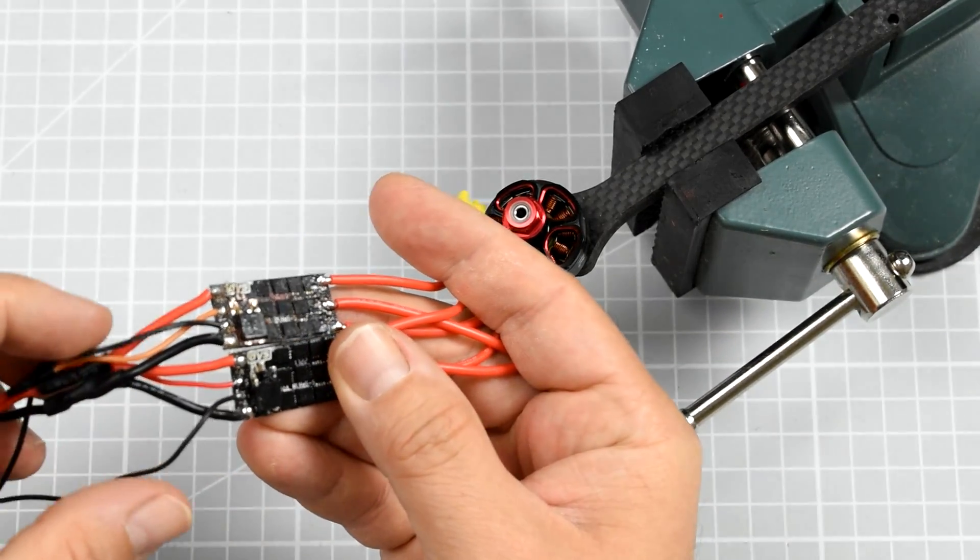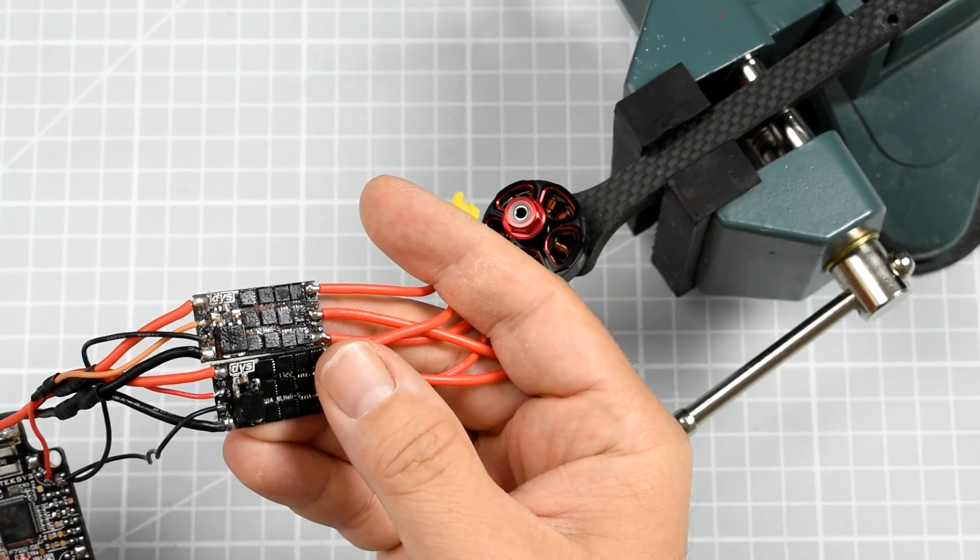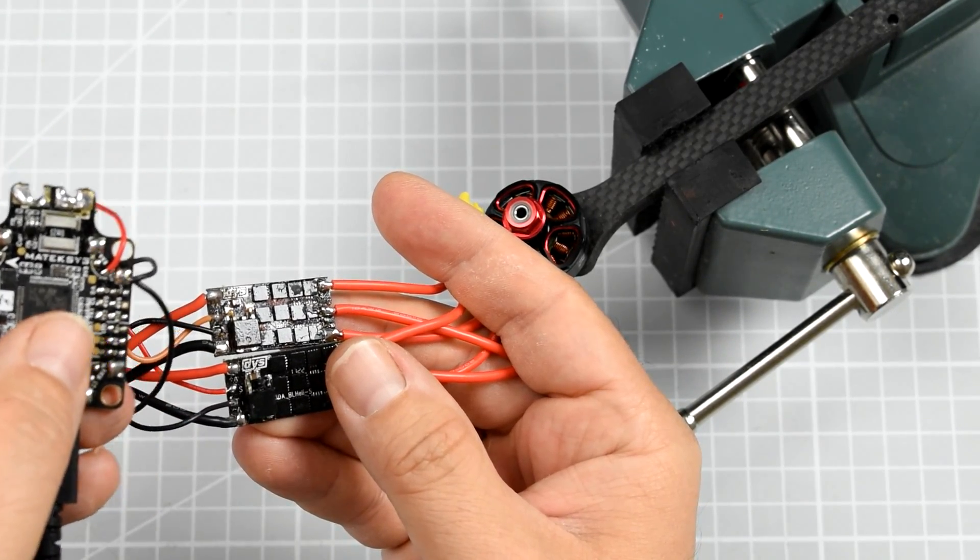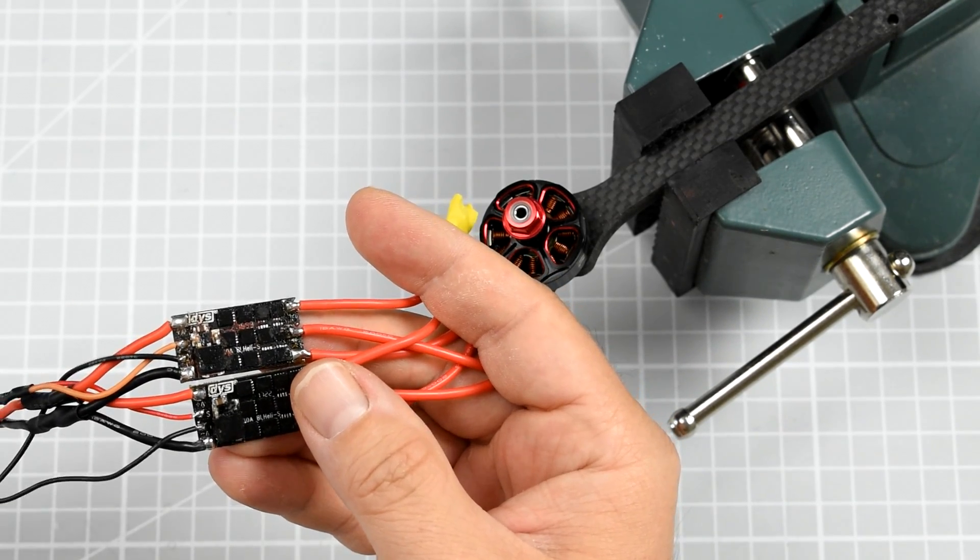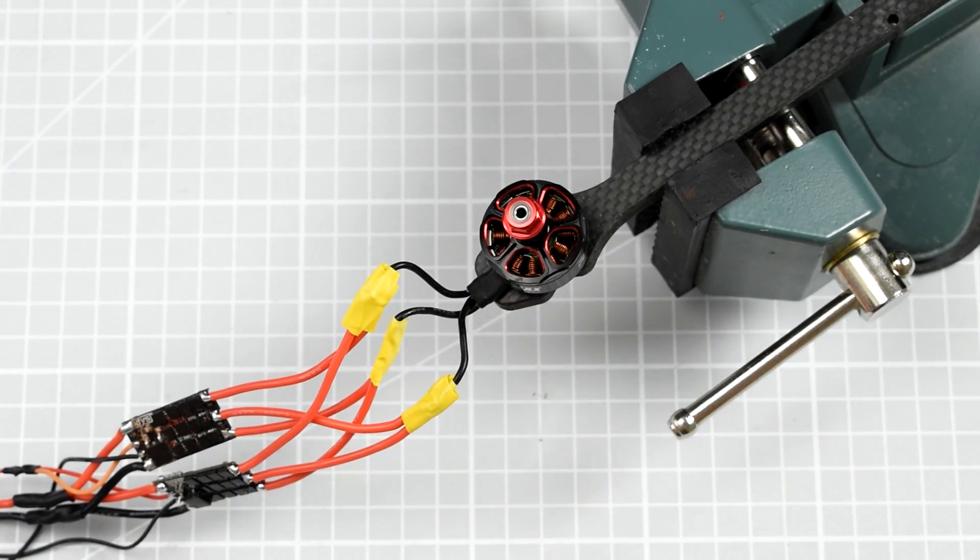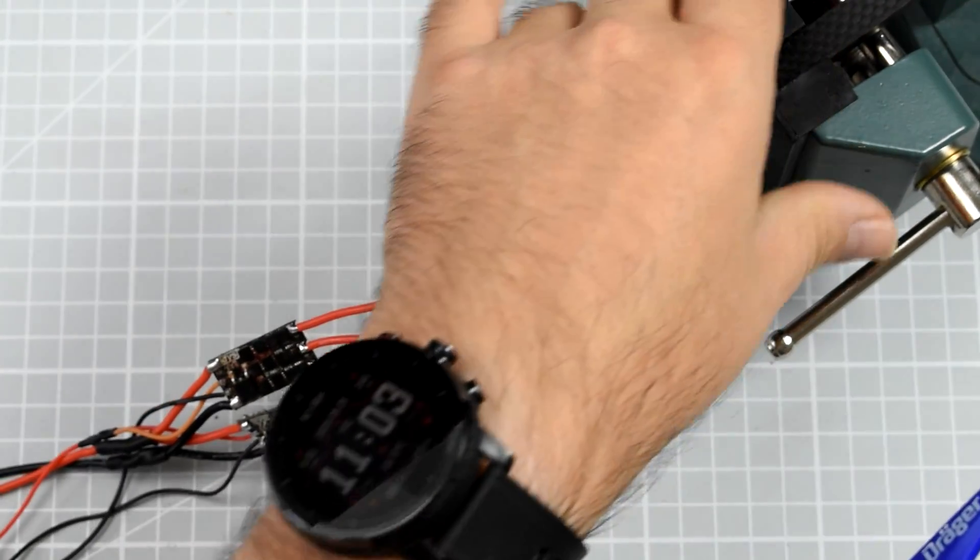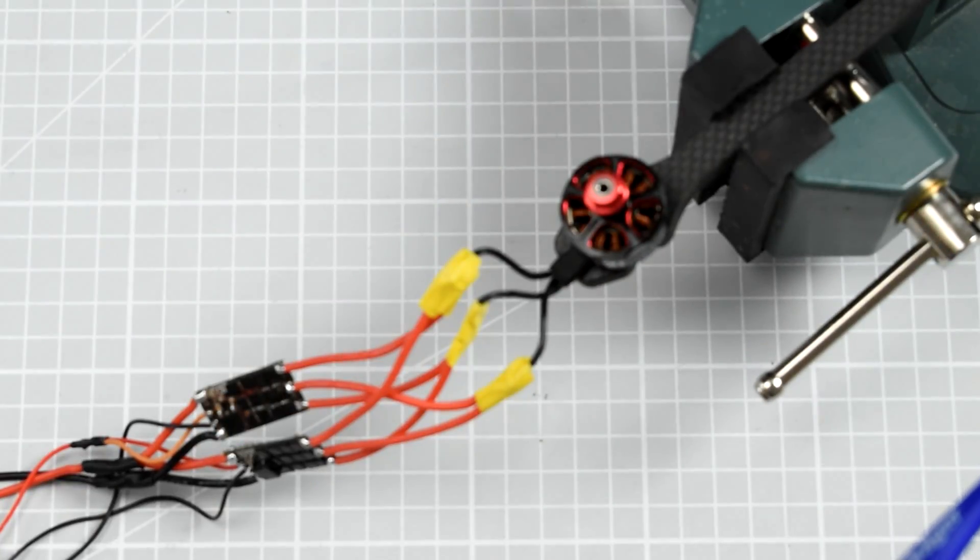And then the signal wires from the ESCs are one more time connected in parallel to one of the outputs on the flight controller that will be driving the ESCs. And what we're gonna do right now is just see what happens when you try to be so creative.